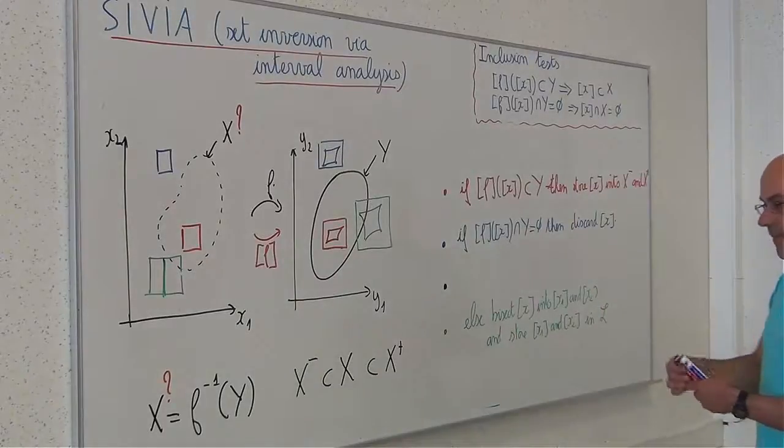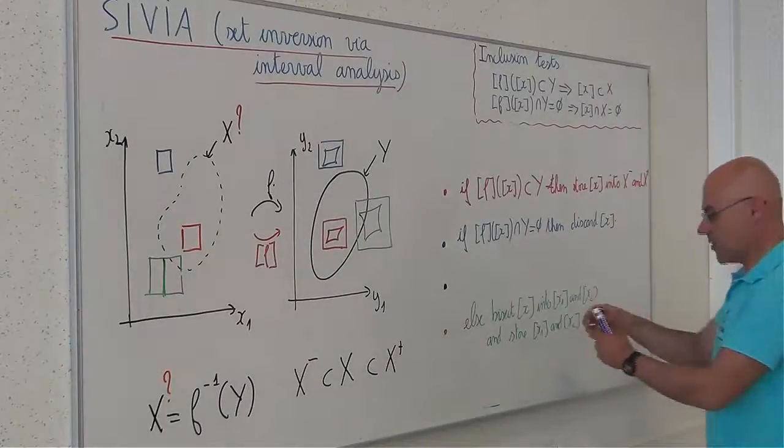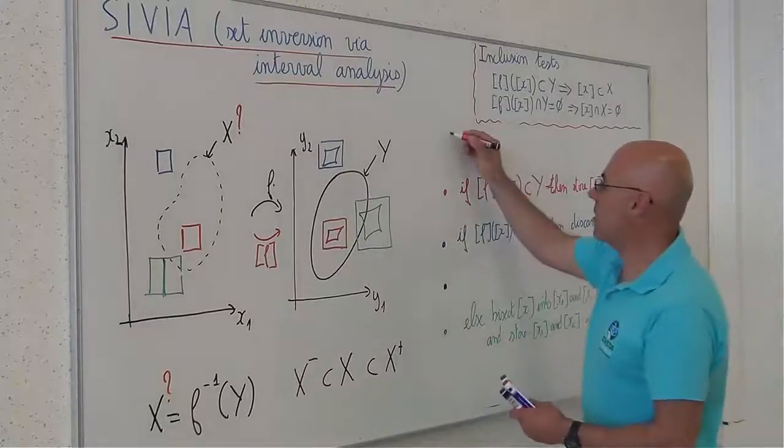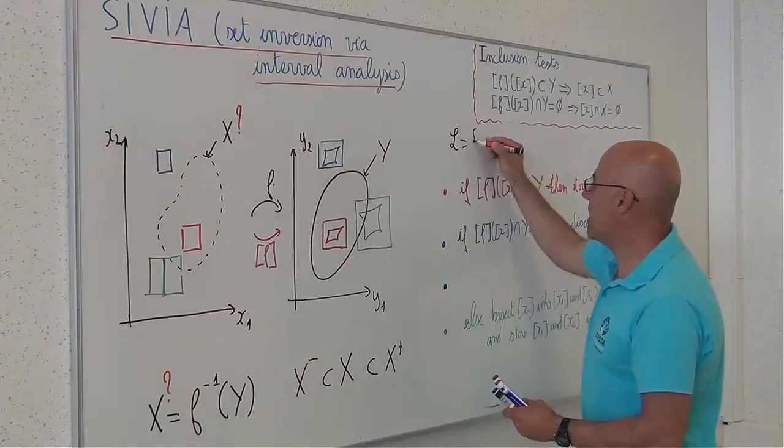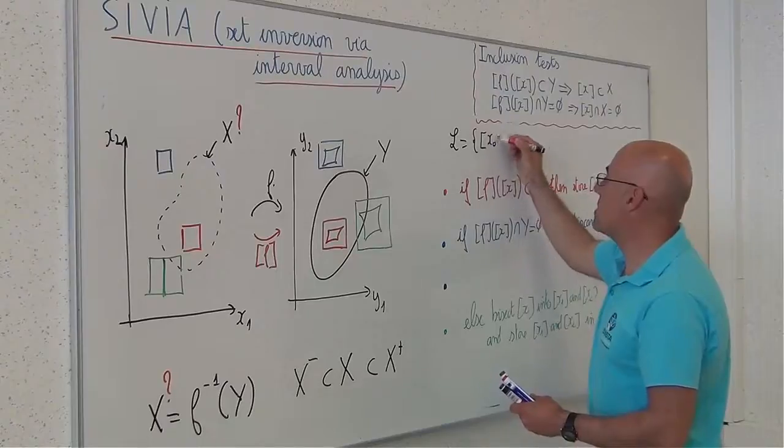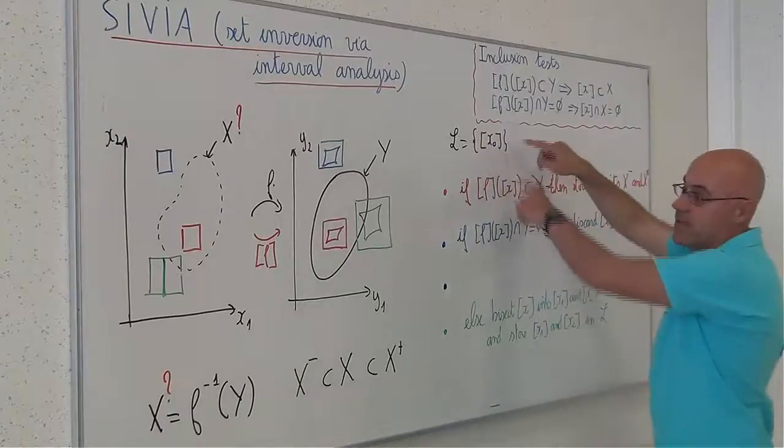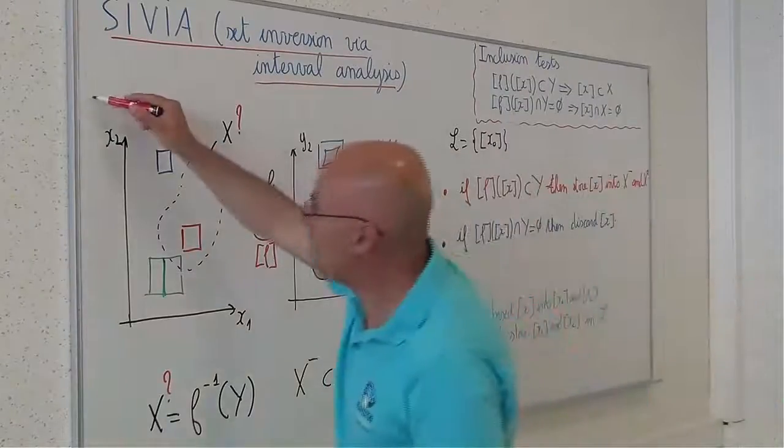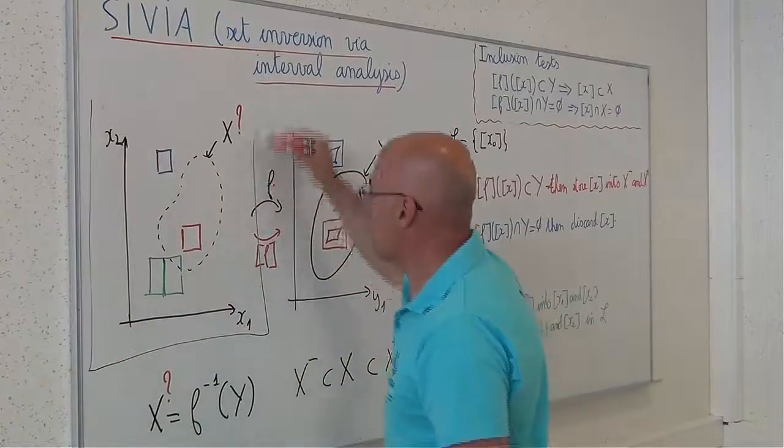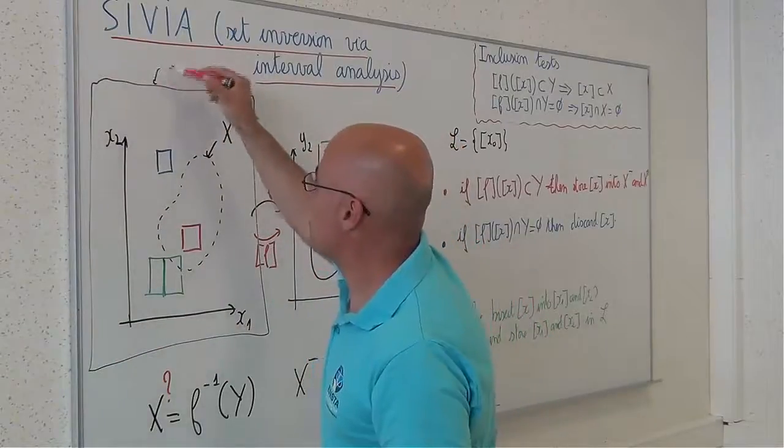Of course, what happens? I will bisect these boxes. I will have at the beginning a list L, which will be initialized with a single box x0, which is huge. It can be for instance x0.